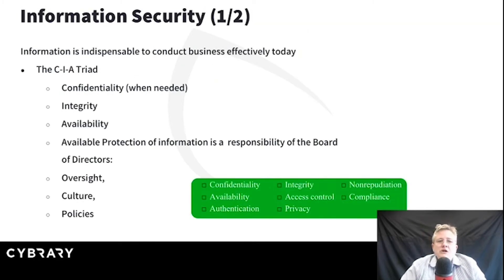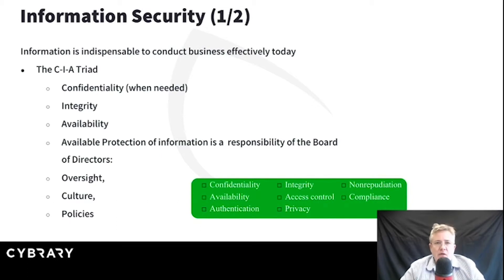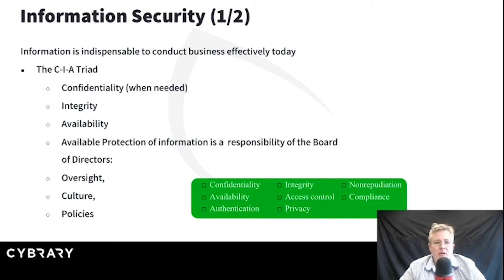We could answer that question in a whole lot of different ways, but how we answer it should have certain themes in line. Every one of us can define information security differently, but we should all ultimately come back to protecting informational assets and providing the CIA triad — the CIA triangle. Confidentiality means we're going to prevent unauthorized disclosure of information. You could hear it called privacy or secrecy, but it's about preventing unauthorized disclosure.